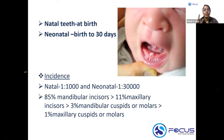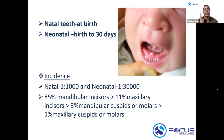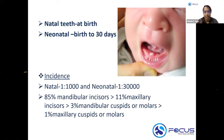The incidence of natal and neonatal teeth is important to know, as is the incidence of cleft lip and palate. The incidence of natal tooth is 1 in 1,000, and the incidence of neonatal tooth is 1 in 30,000. This ratio is important.